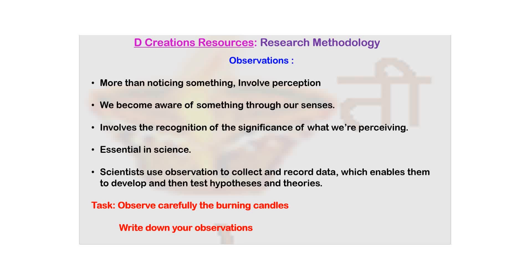Now, when you say you're observing something, it doesn't mean just that you're looking at something. It's not about just using your sensory organ — your eyes. You also need to involve your brain when you're observing something. It involves perception. You become aware of what it is, and you also recognize the significance of whatever you are noticing, seeing, and observing.